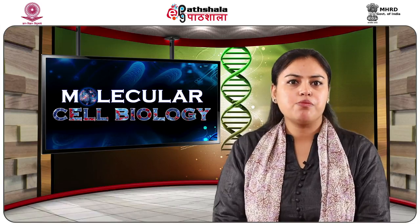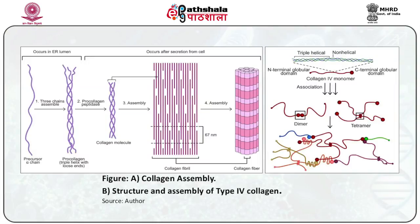The three collagen precursor chains are assembled in the ER lumen to form triple-helical procollagen molecules and transported to the Golgi complex. After secretion into the ECM, procollagen is converted into collagen by the enzyme procollagen peptidase. The processed molecule, called tropocollagen, then binds and self-assembles into collagen fibrils, which further assemble into collagen fibers by lateral interactions.